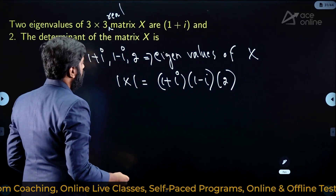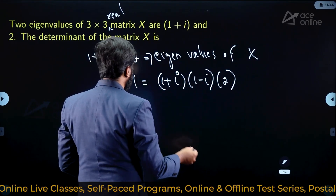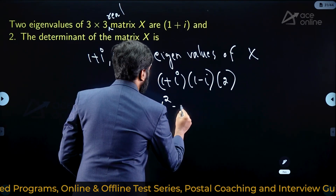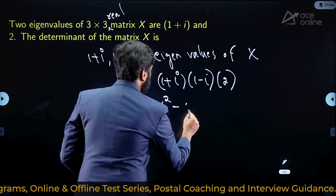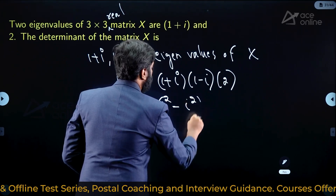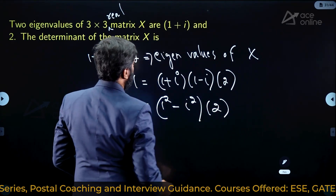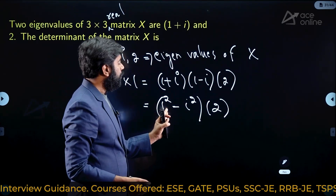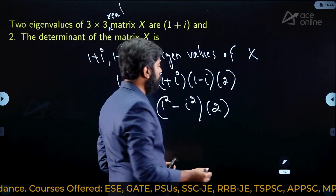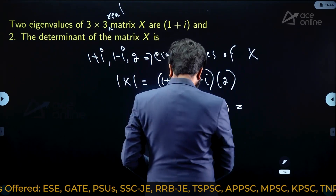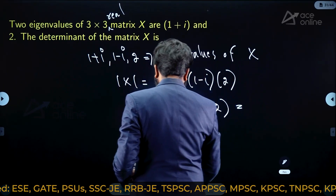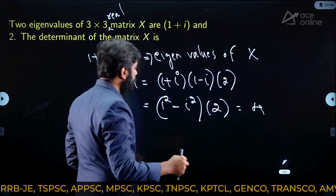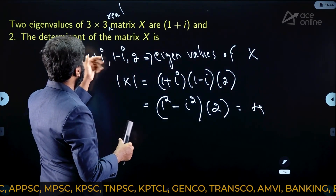(1+i)(1-i) equals 1² - i². That is 1 - (-1) = 2. Multiplied by 2 gives 4. So the determinant of the matrix is 4. The key learning here is that for a real matrix, complex eigenvalues appear as conjugate pairs.